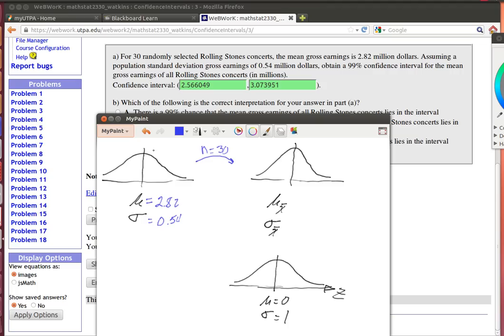If this is normally distributed and we know this standard deviation, then over here the mean of all of the samples of size 30, the mean of the samples is going to be the same as the mean that we had back here. So it's going to be 2.82.